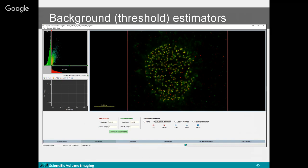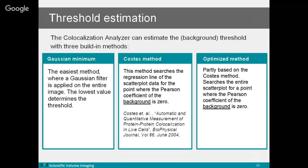Huygens co-localization has three different automatic threshold estimators built in. The first is the Gaussian minimum, which is the fastest and simplest. The second is the Costes method, which is the published method. The third is an optimized method based on the Costes method.